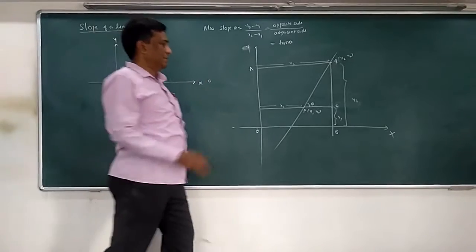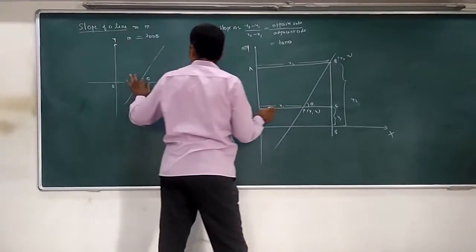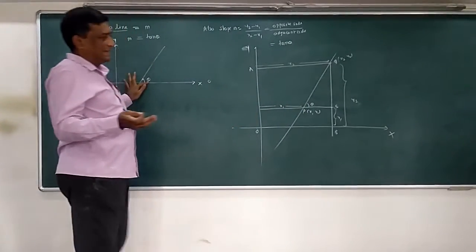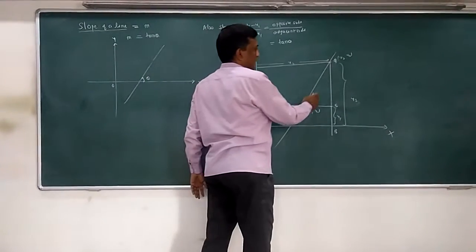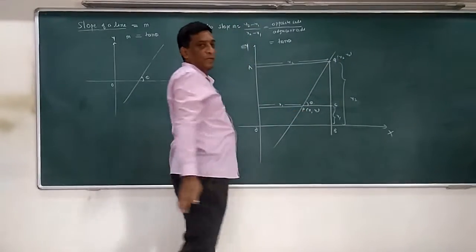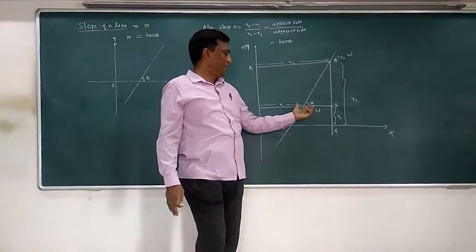Now how they are different. See here, they give you inclination, how much line is inclined with x-axis, and you find slope by tan theta. Here they don't give you inclination, they give you coordinates of P and Q. In this figure if you see properly,